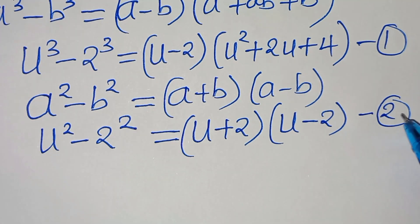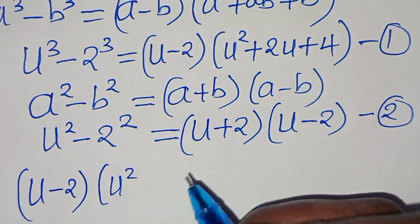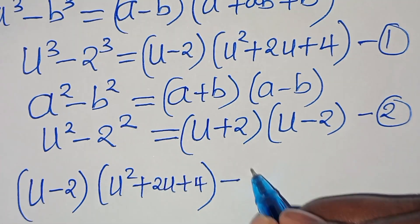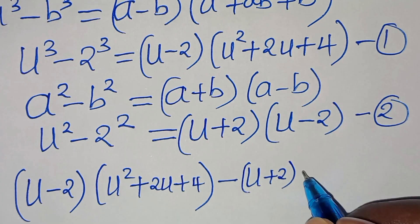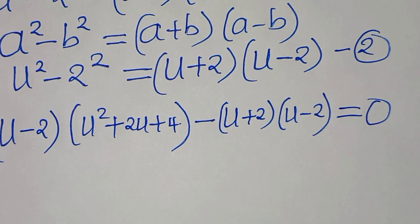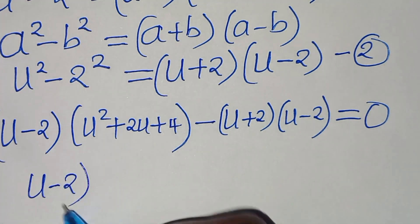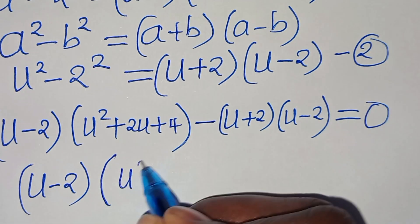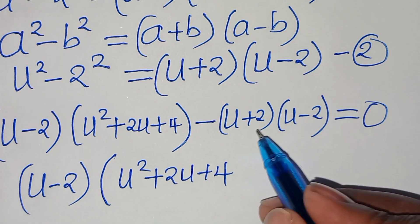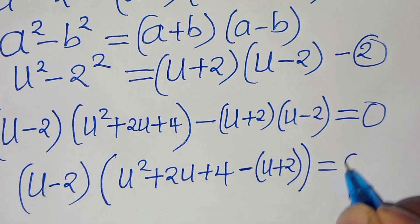Now, let's combine equation 1 and equation 2, so that we have u minus 2, and then we have u squared plus 2u plus 4, then subtract u plus 2, then we have u minus 2, this is equal to 0. So we have u minus 2, and into the parenthesis we have u squared plus 2u plus 4, then minus u plus 2, this is equal to 0.